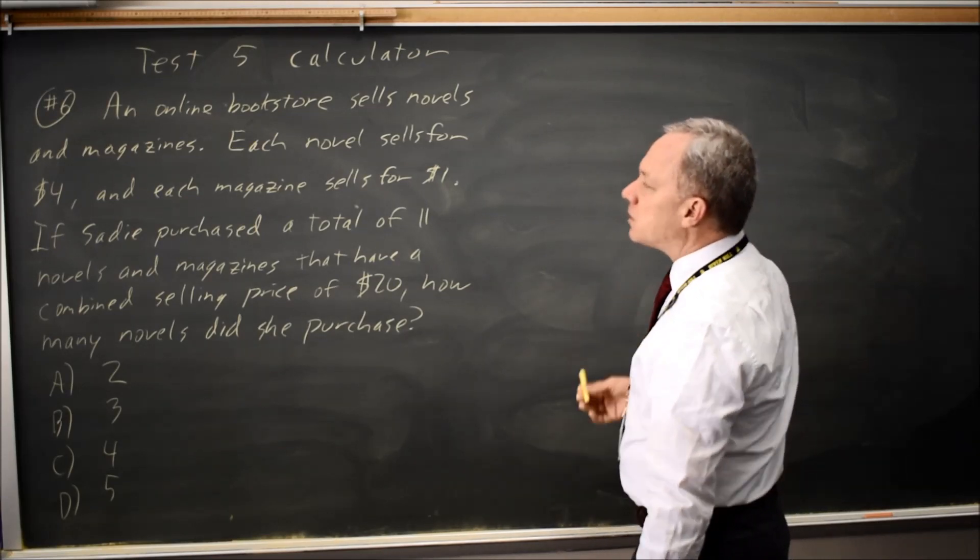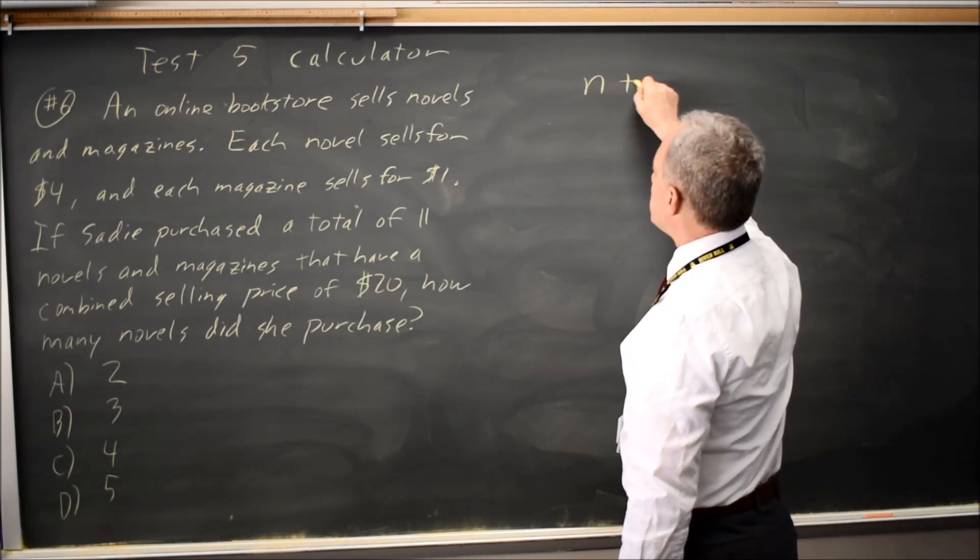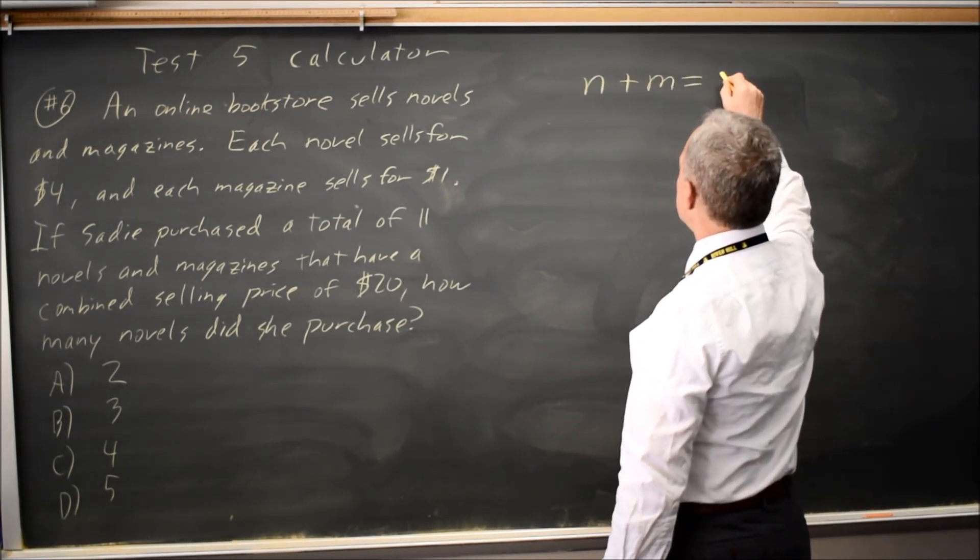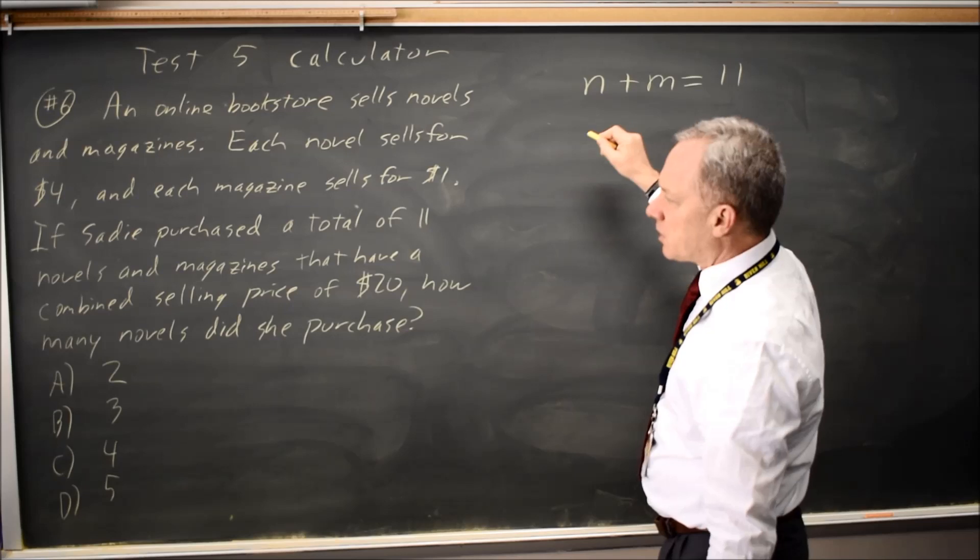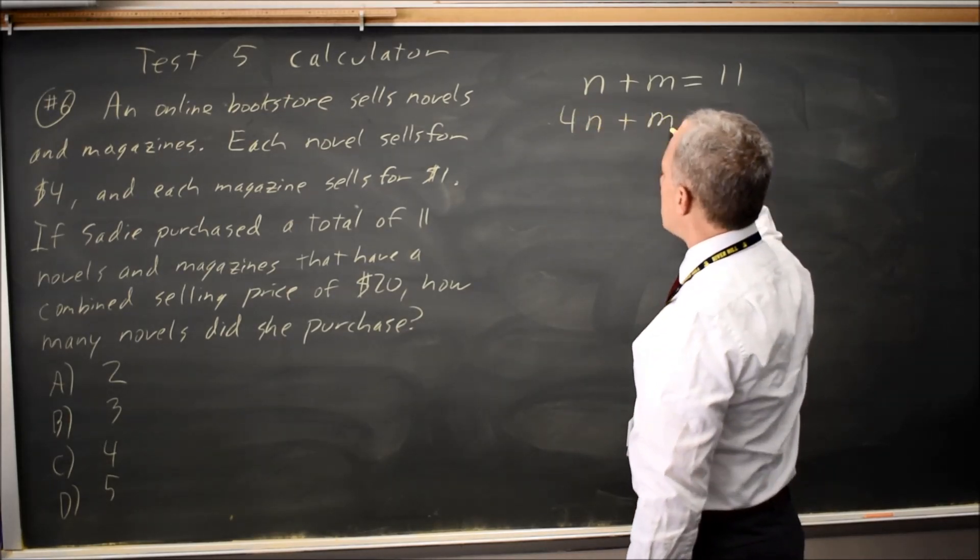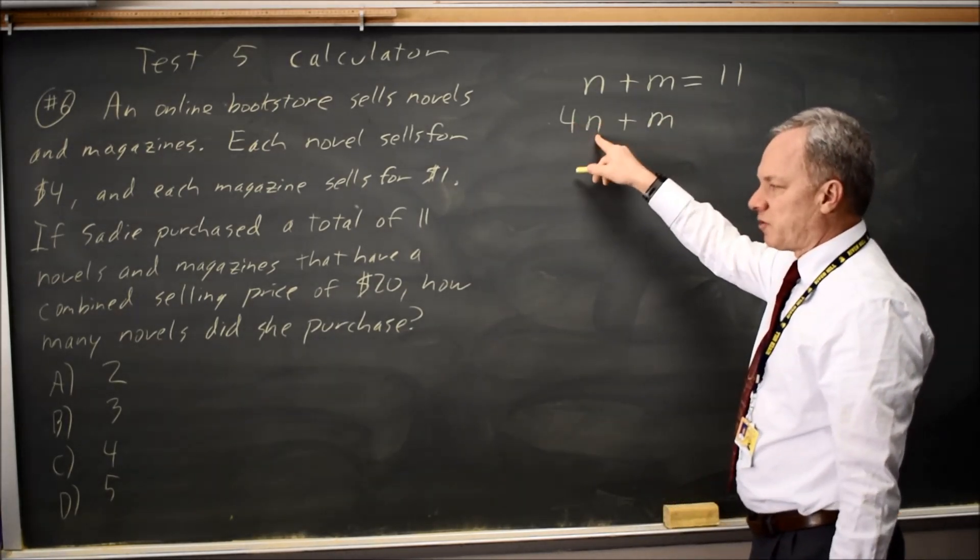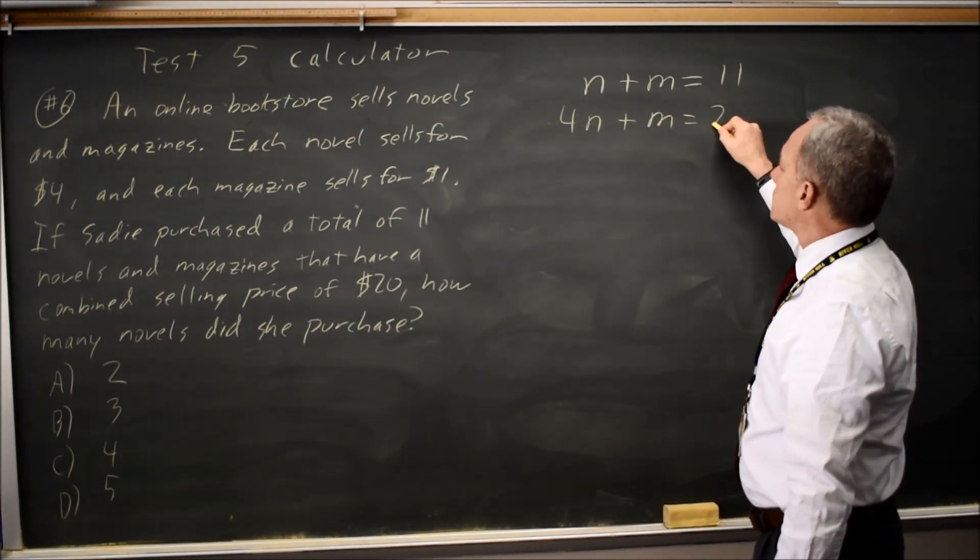Let's take a look at it. Sadie purchased a total of eleven novels and magazines. I'll make n the number of novels and m the number of magazines, and that adds up to eleven. Novels are four dollars, magazines are one dollar, and the total price you paid, which is four times the number of novels plus the number of magazines, is twenty.